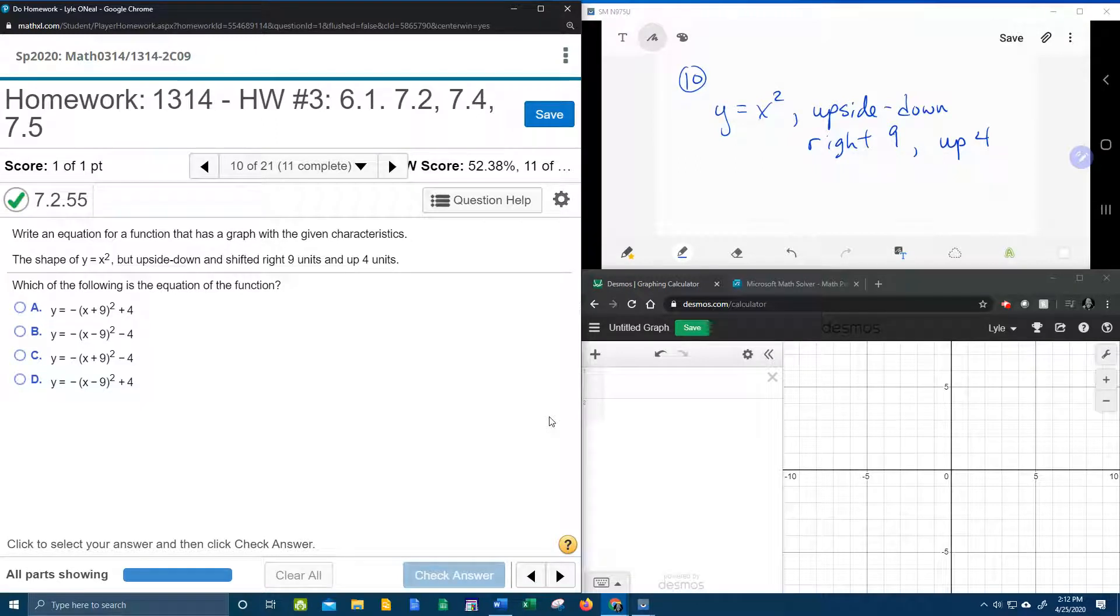All right, here we go. Question number 10 from our college algebra homework number 3 in MyLabMath wants us to write an equation for a function that has a graph with the given characteristics.